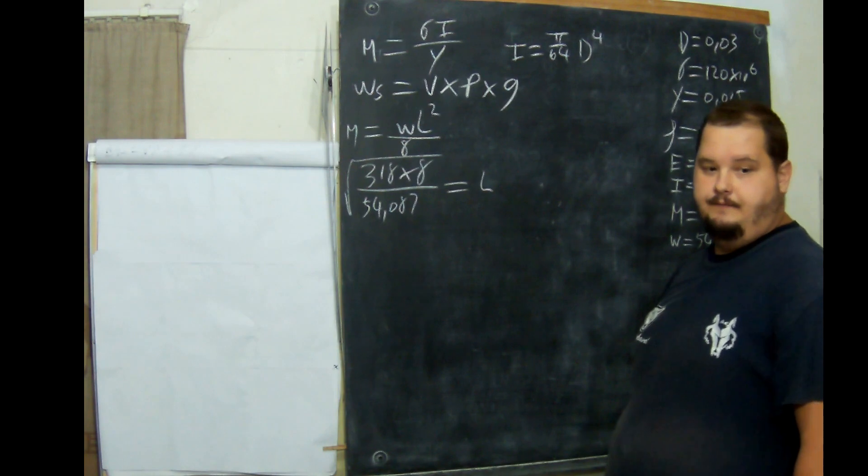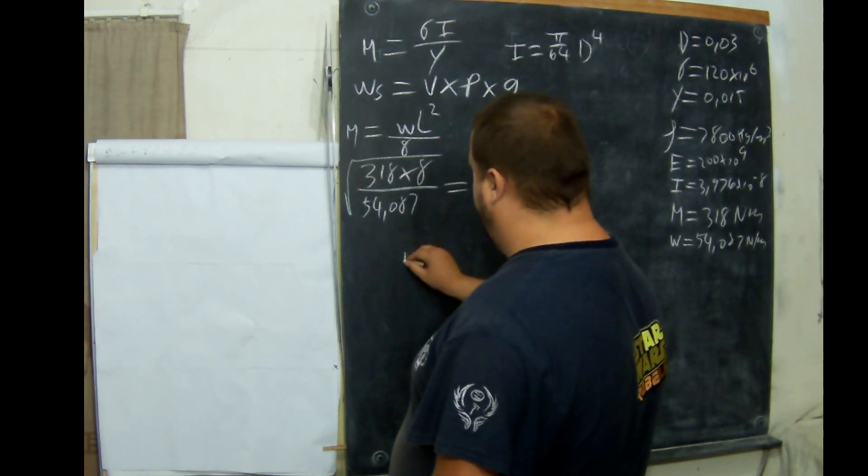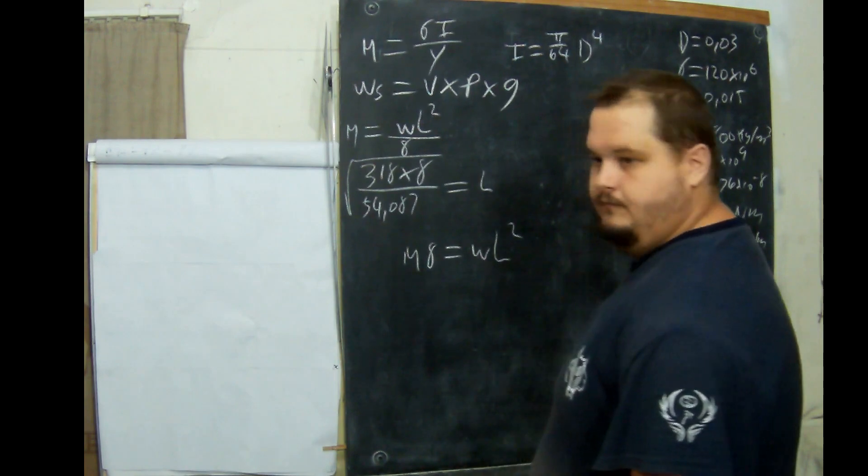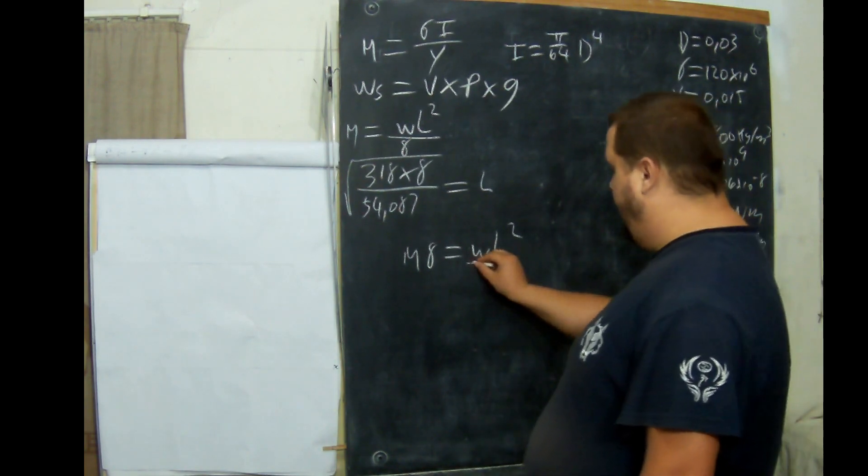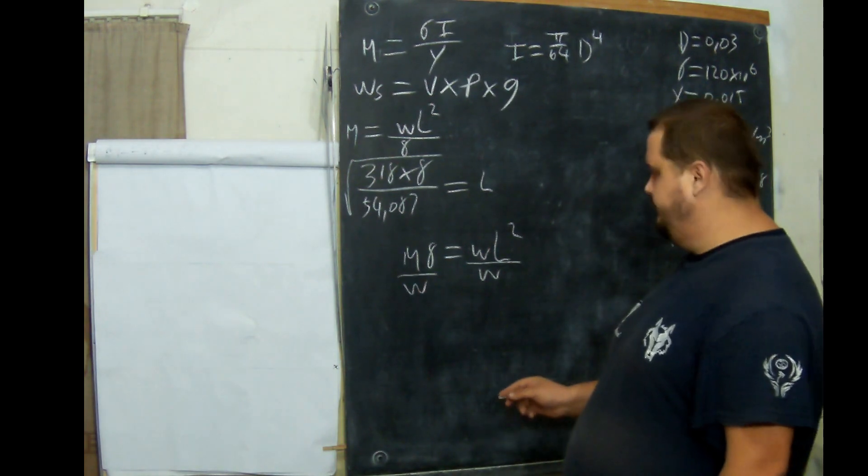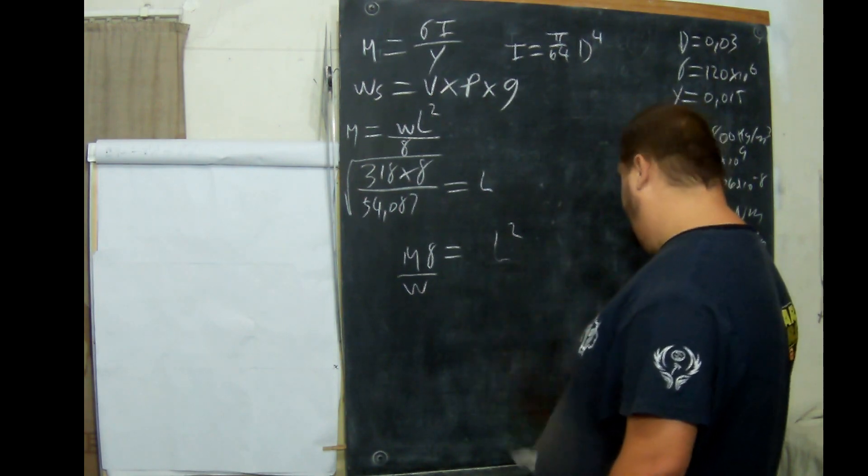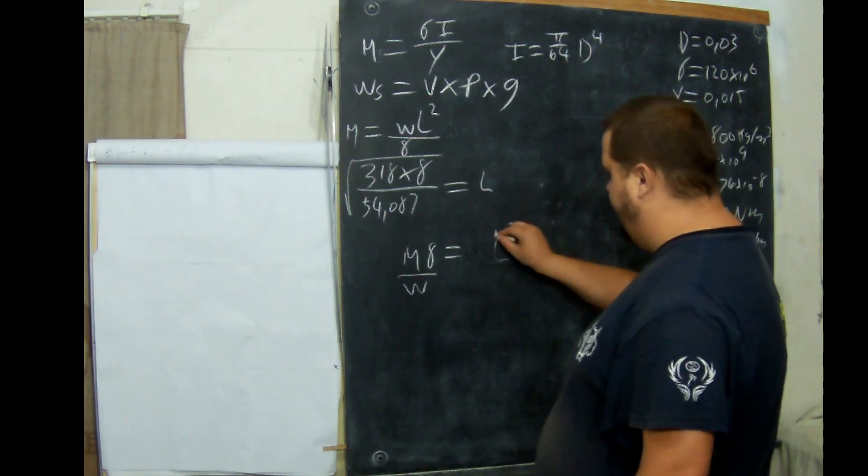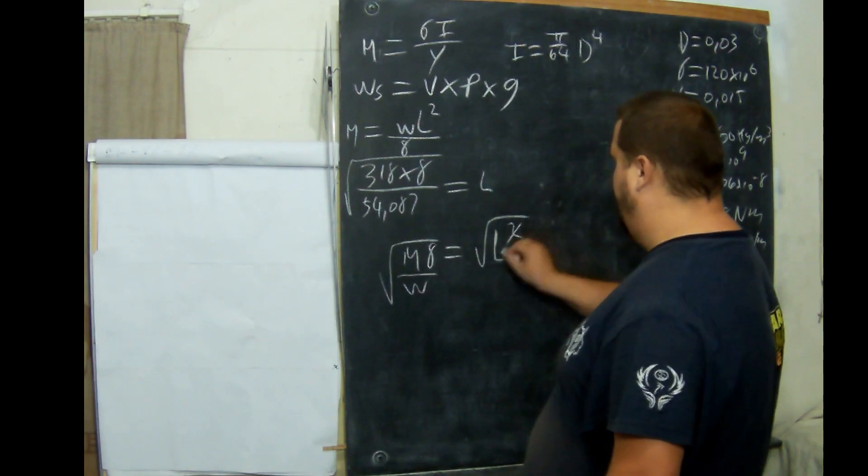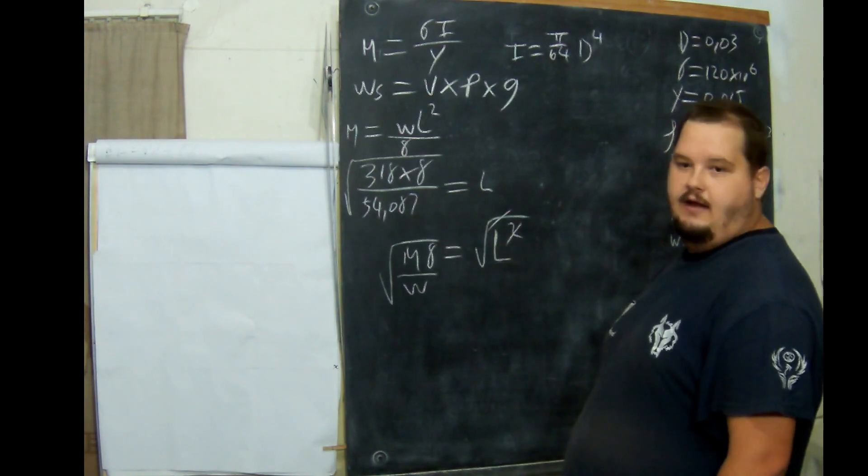Let me explain what I've just done. I have taken M and multiplied it by 8. So M times 8 equals W L squared. Now what I've done is I've divided by W. So W is gone. Now I'll be left with L squared. Now to take a squared away, we use square root of it. And that goes. We're left with L. That is exactly what I've done here.